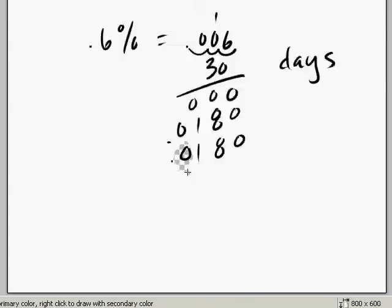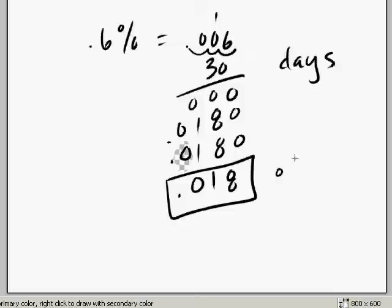So, well, essentially that's what we're looking at, is our total amount of time is 0.018 of 30 days. So let's do the next course. You want to know how much time does that really mean?